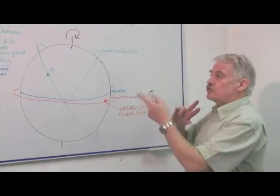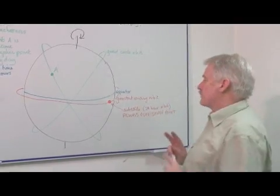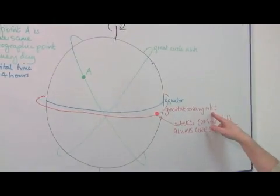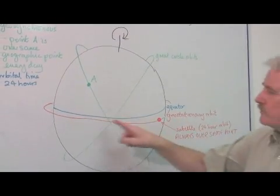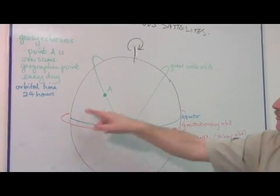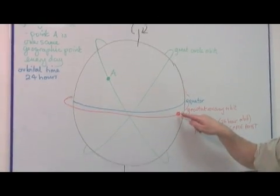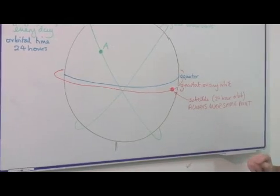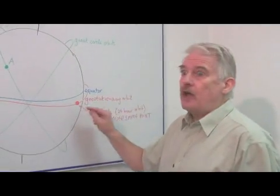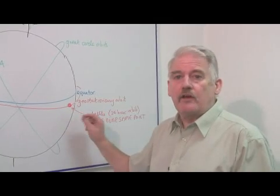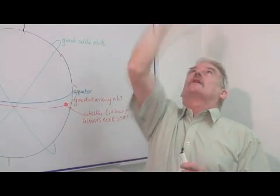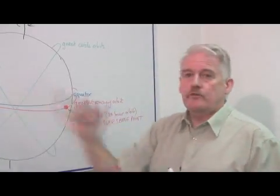Now there are two basic different types. You've got a geostationary orbit, which can only occur at the equator. A satellite above the equator is on a great circle, and if it rotates once a day then it will always be over the same point on the Earth. So that satellite will actually be up there always, which is extremely useful.